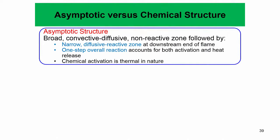We will go into the difference between the asymptotic versus chemical structure. The asymptotic structure has a broad convective-diffusive region and a non-reactive region. So most of the flame in the asymptotic view is essentially non-reactive — it is only within the narrow diffusive-reactive zone at the downstream end of the flame where we have reactions.